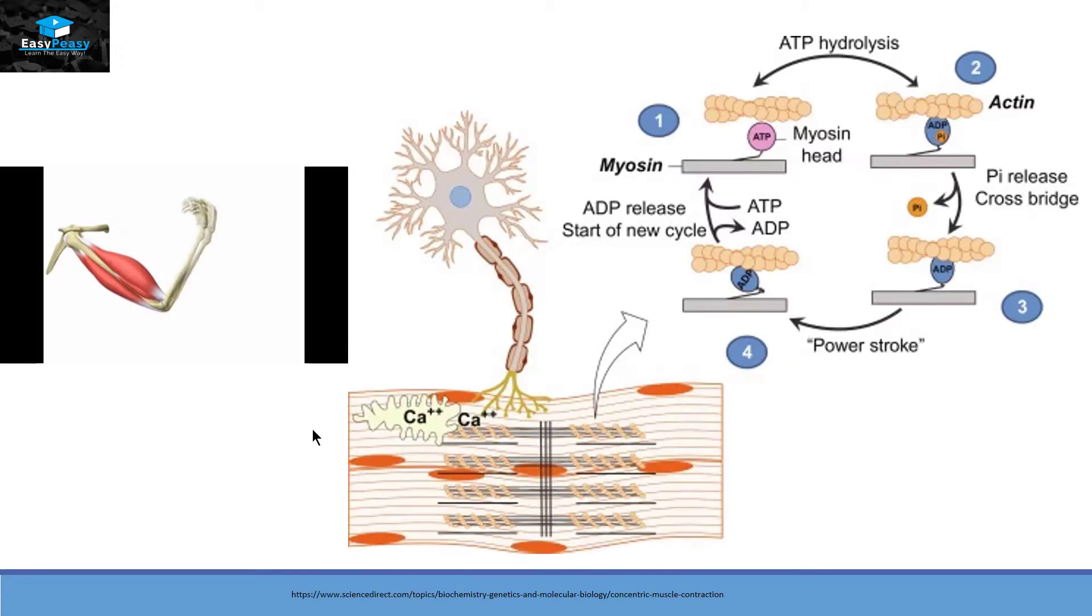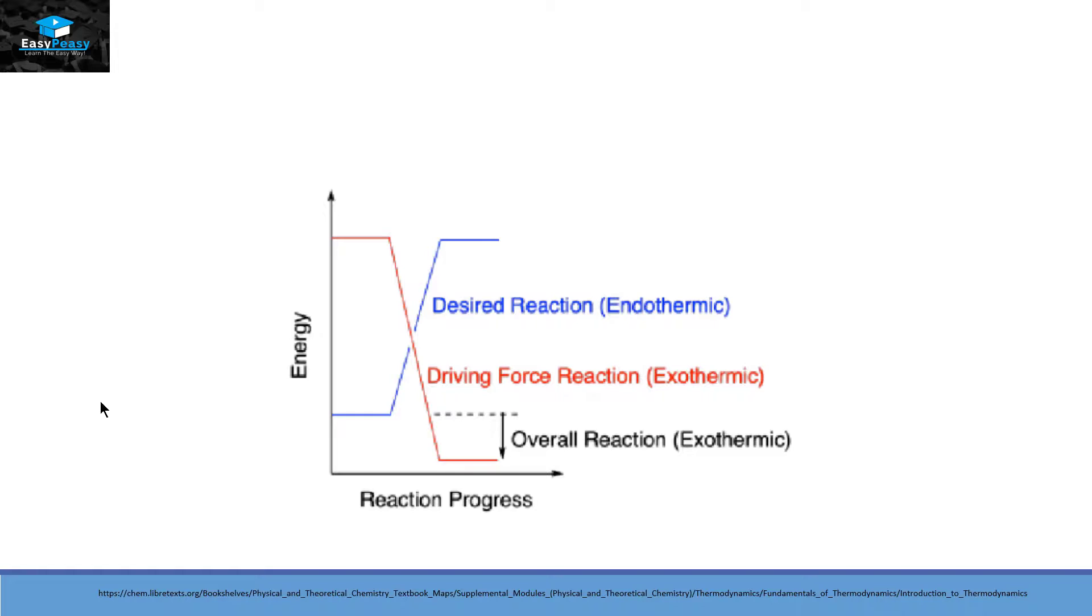By this way this ATP is going to couple itself with various reactions present in our body in order to perform different types of functions. So all the endothermic reactions when they are coupled with ATP that is the exothermic reaction the overall reaction is exothermic and that's how it is going to perform its function.